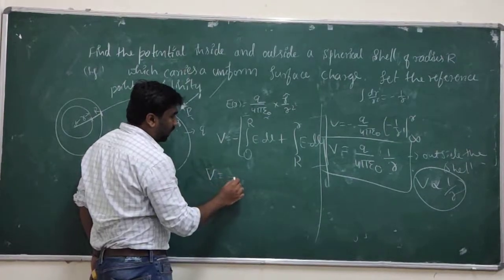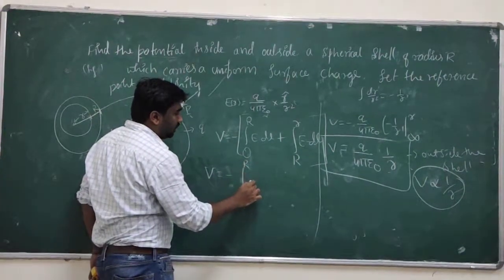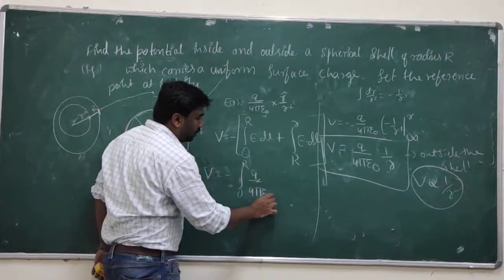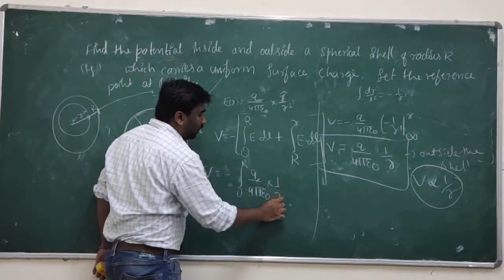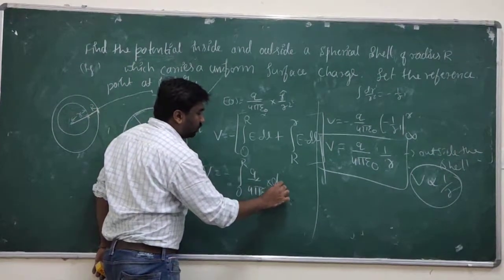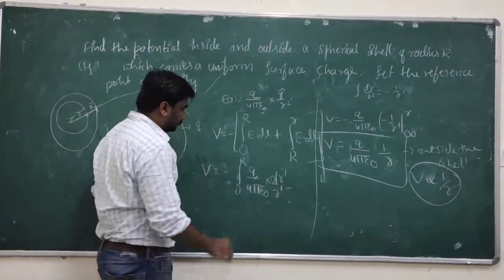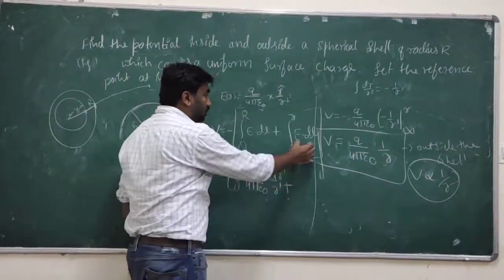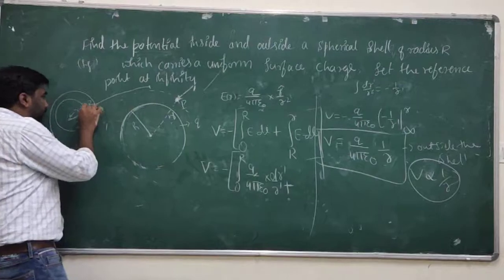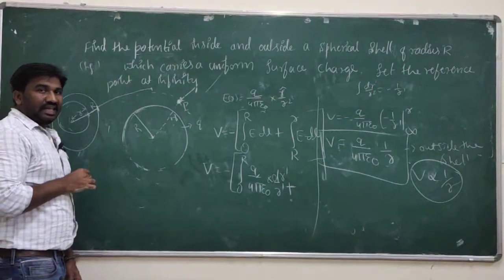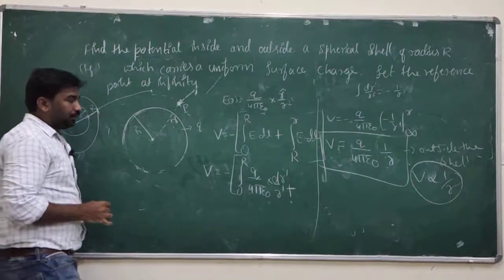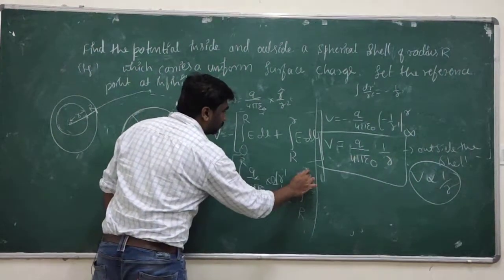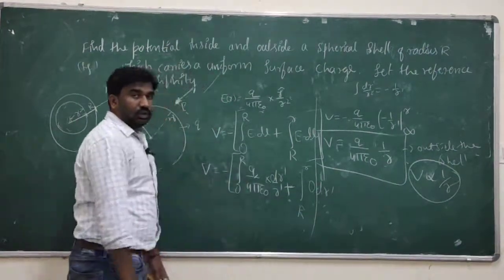V is equal to minus integration from infinity to R of q divided by 4 pi epsilon r, times 1 over r-dash, dr-dash. Plus the second part: inside the spherical shell, the electrostatic field is zero, because the charges are distributed outside on the shell surface.